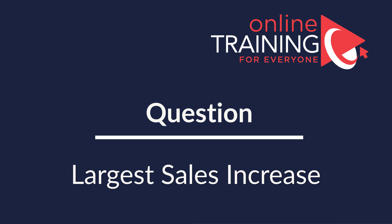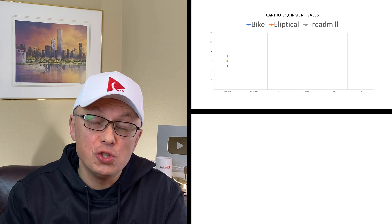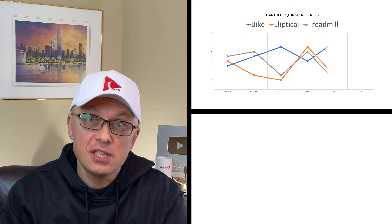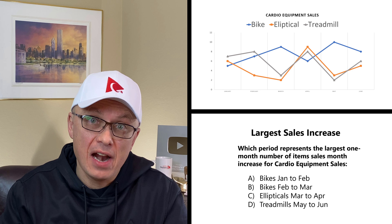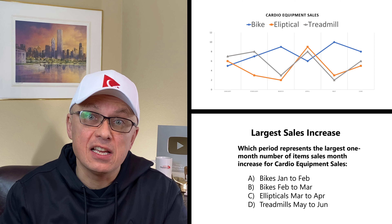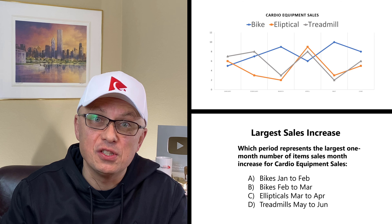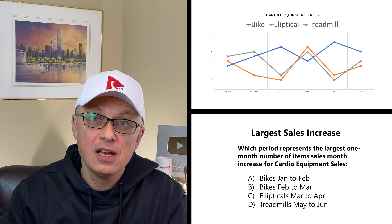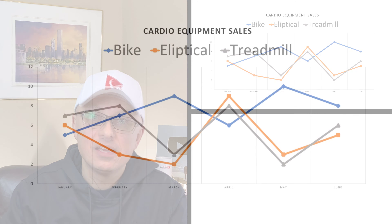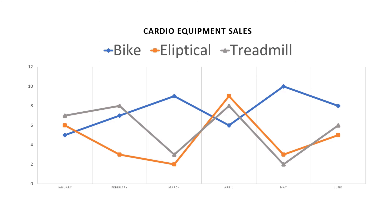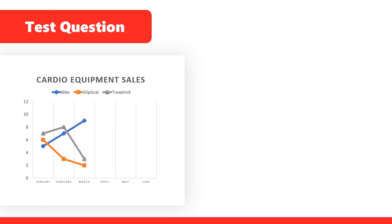A lot of times you might get a question which asks you to determine a sales increase. You are typically presented with a graph showing lines that represent different sales. In this case, the chart shows sales of cardio equipment from January to June: bike sales represented by the blue line, elliptical sales by the orange line, and treadmill sales by the gray line. The question asks you to determine the largest sales increase.